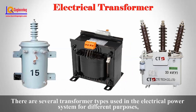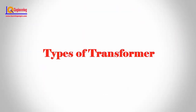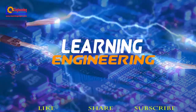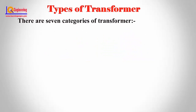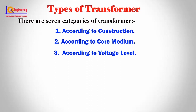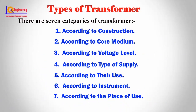There are several transformer types used in the electrical power system for different purposes, like in power generation, distribution, transmission, and utilization of electrical power. There are seven categories of transformers made for different purposes: 1. According to construction, 2. According to core medium, 3. According to voltage level, 4. According to type of supply, 5. According to their use, 6. According to instrument transformer, 7. According to place of use.